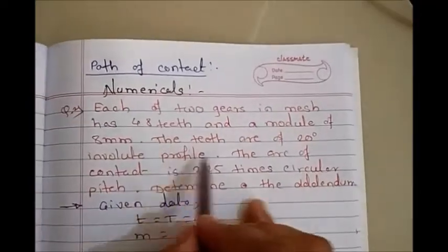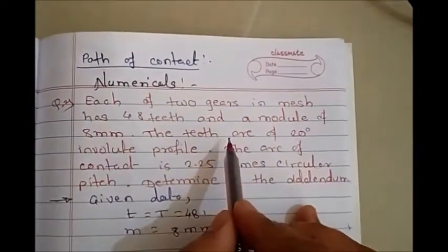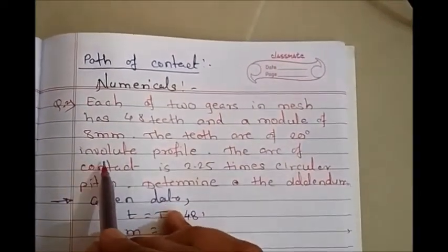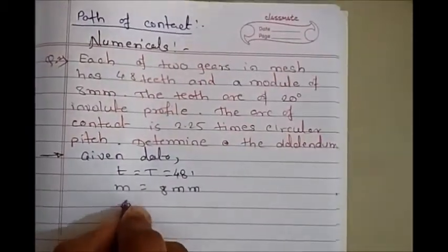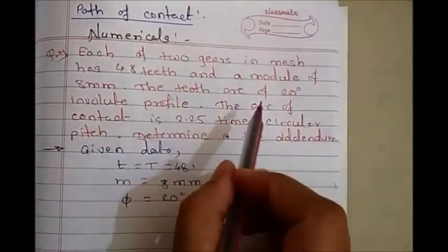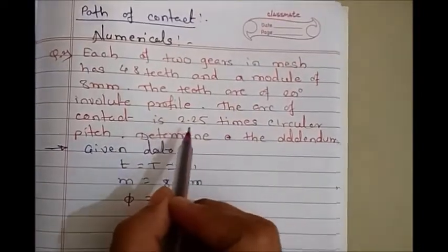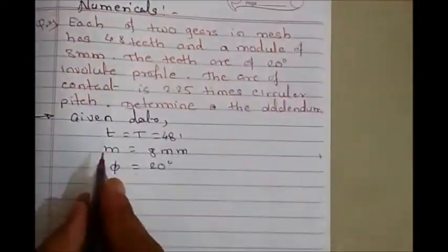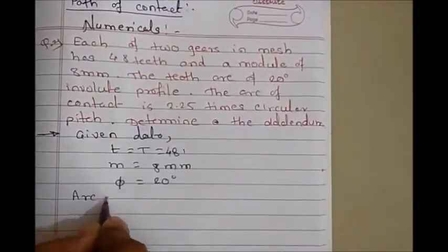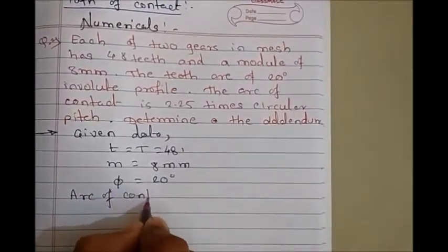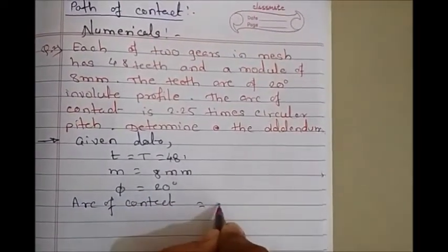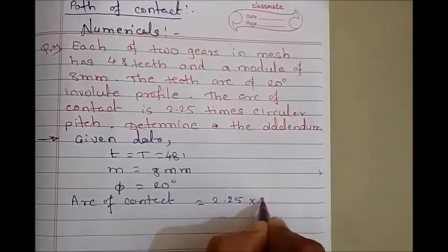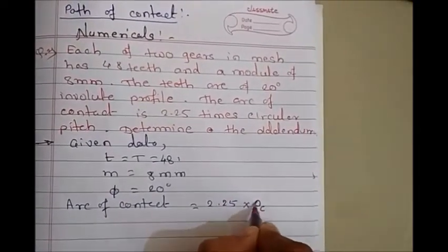The teeth are of 20 degree involute tooth profile, which means pressure angle φ equals 20 degrees. The arc of contact is 2.25 times circular pitch, so arc of contact equals 2.25 times Pc.